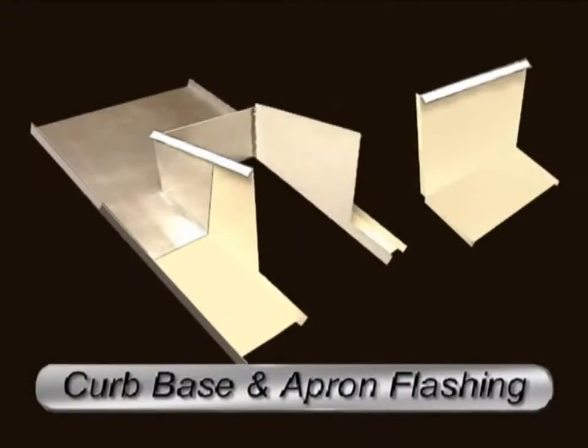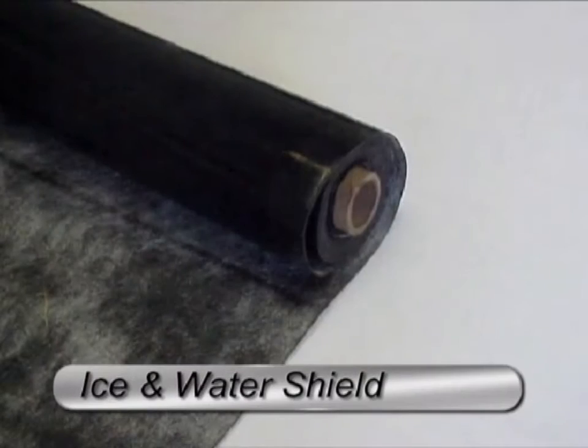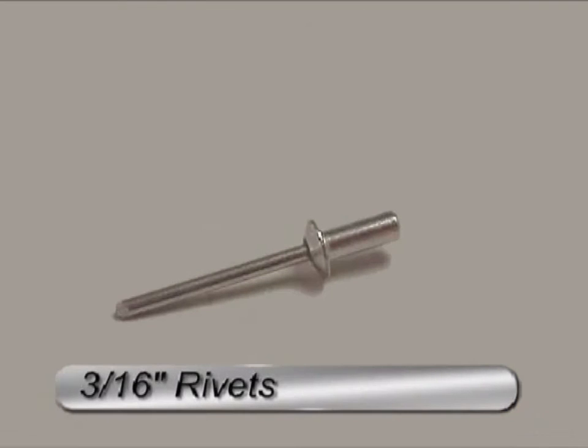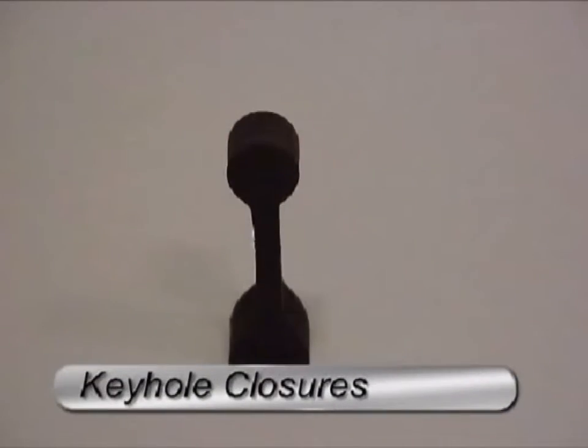To complete the typical curb, you will need curb base, apron flashing, offset cleat, ice and water shield, one part polyurethane sealant caulk, 3/16 inch sealed rivets, 1/8 inch by 1 inch butyl tape, keyhole closures, and metal and foam closure system.